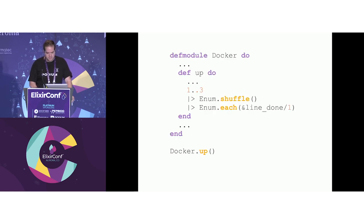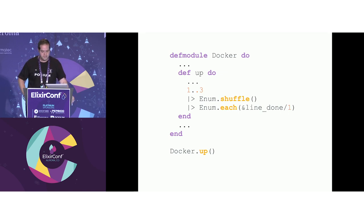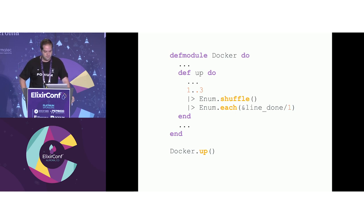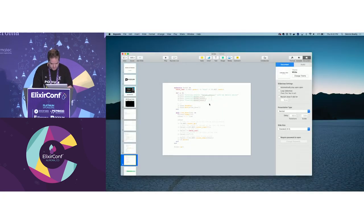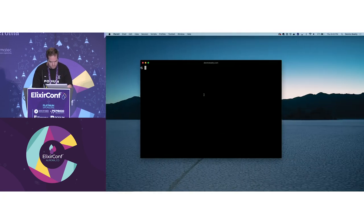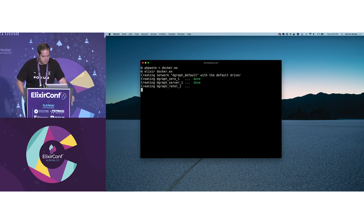One thing this does — and in our original function I created a range from one to three, shuffled it, and called the line-done function for each — is it creates this slightly longer bit of code. Let me go ahead and demo that. I'll paste that into an Elixir file... and we see it creates the text and then appends 'done' to those in random order.